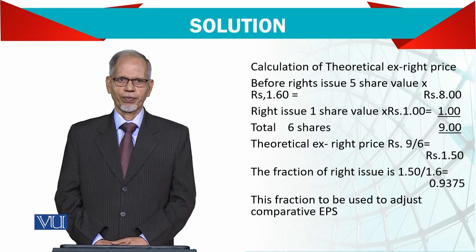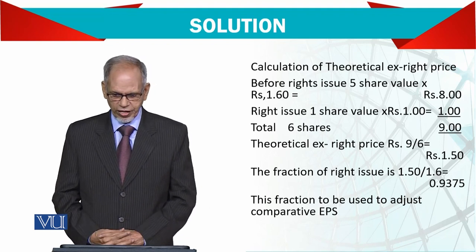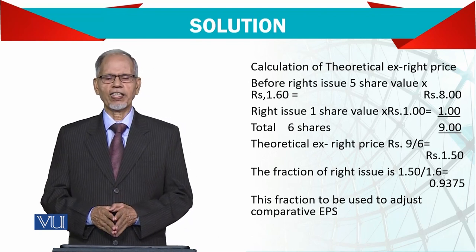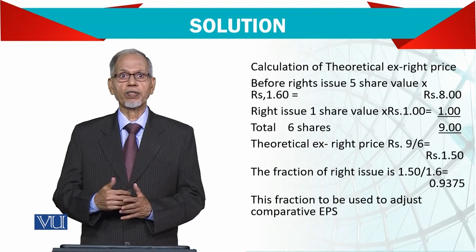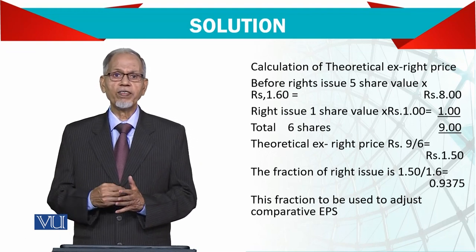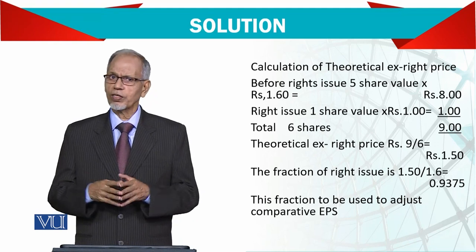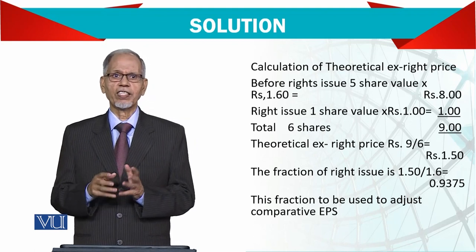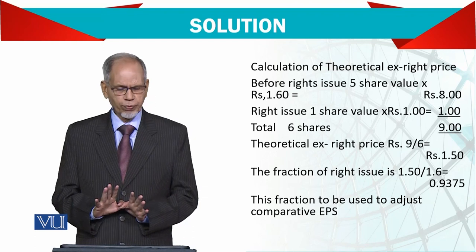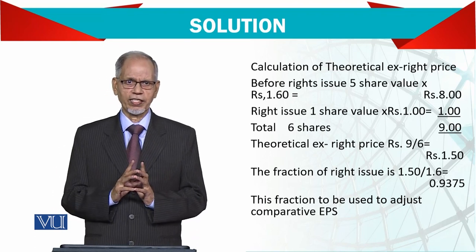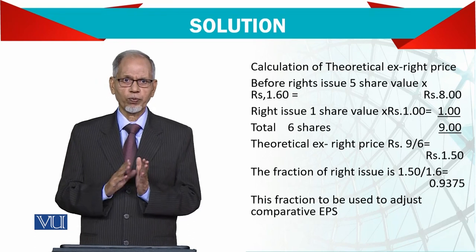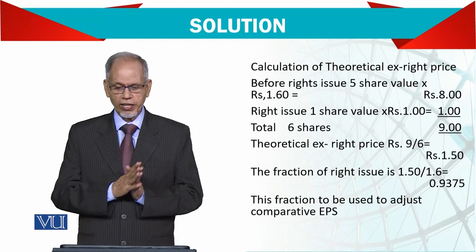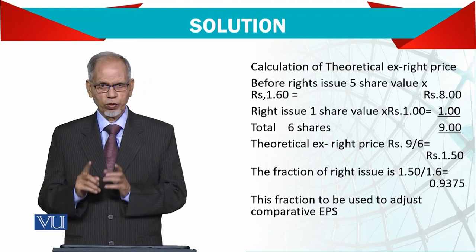When there are rights issues, an additional calculation is required, which is called the Theoretical Ex-Rights Price (TERP). It shows what the share price is before and after the rights issue. We call it theoretical because practically it differs in the market. The calculation is simple: 5 shares at a market price of 1.6 equals 8.0, and 1 rights share at 1.5 gives a total of 9.0 for 6 shares.